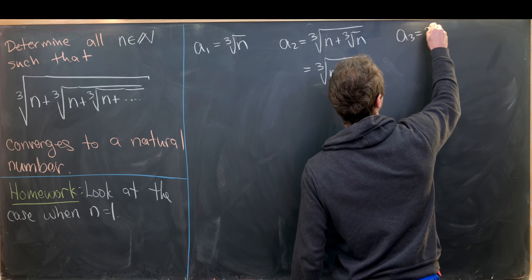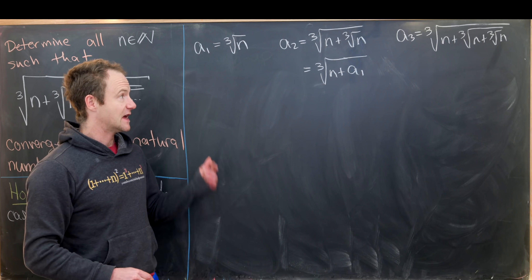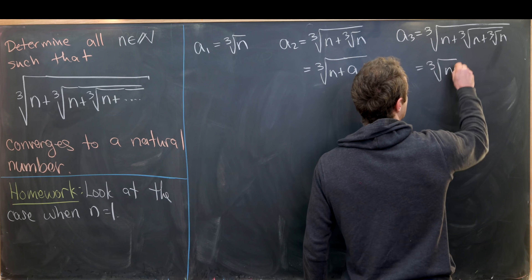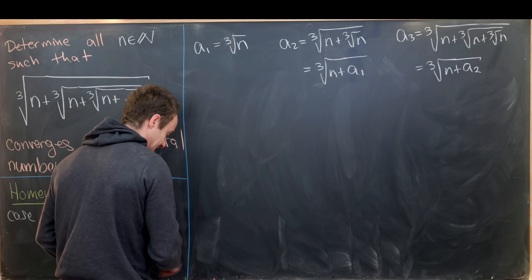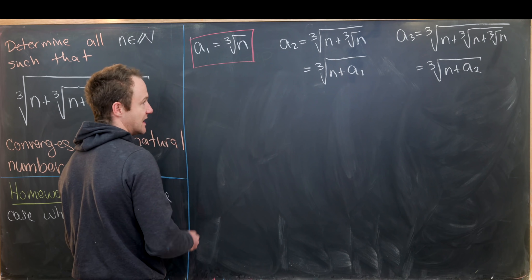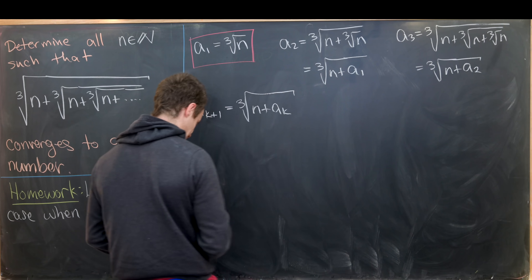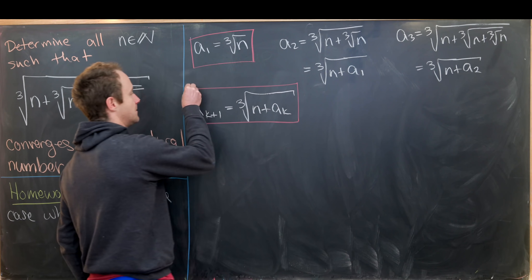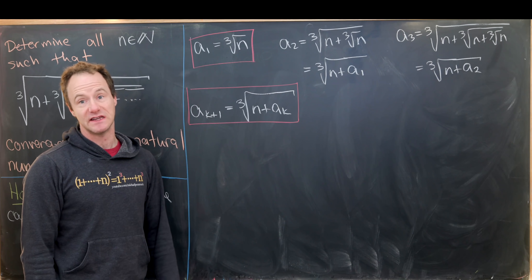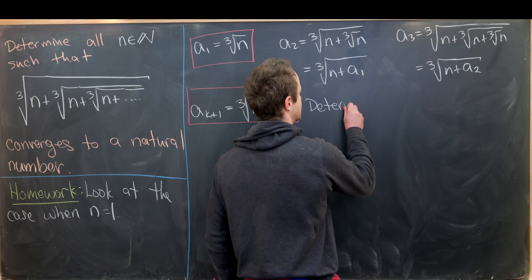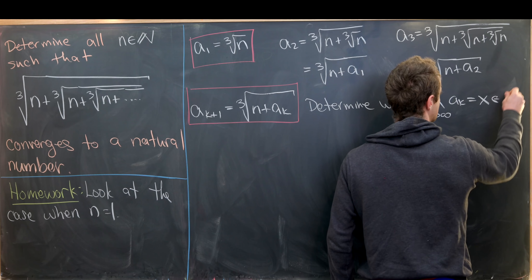The next term, a₃, equals the cube root of n plus the cube root of n plus the cube root of n — a triple nesting. Again, we can see the recursion: that's equal to the cube root of n plus a₂. So a₁ = ∛n is the seed of our sequence, and then we have the one-step recursion aₖ₊₁ = ∛(n + aₖ). These two things determine our sequence, and the infinite nesting will be the limit of this sequence.